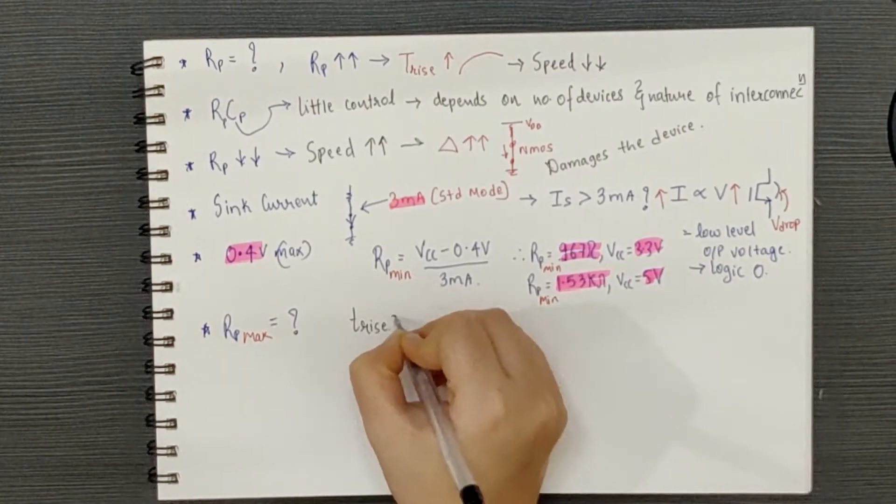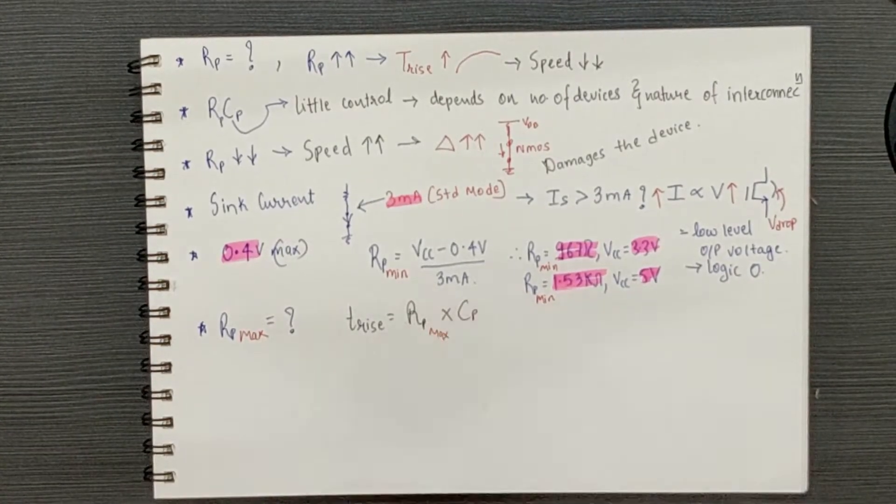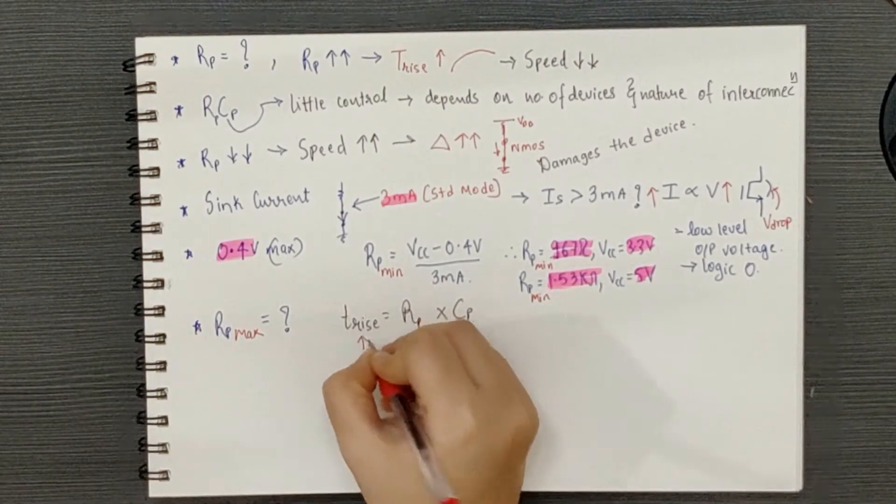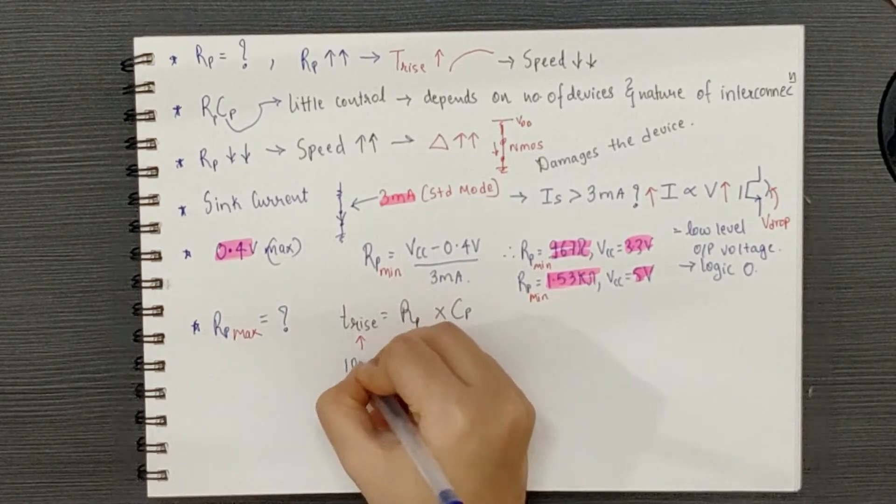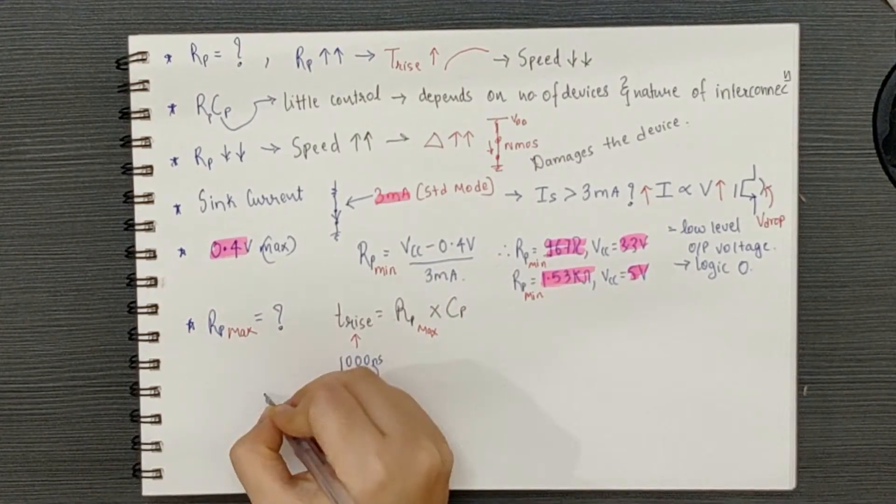What about pull-up resistor maximum value or RP max? So, we can find that by considering this formula which is T rise is equal to RP max into C. Now, I2C standard mode specifications state that the maximum rise time can be 1000 ns in standard mode.